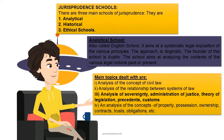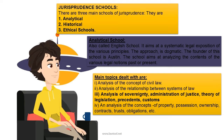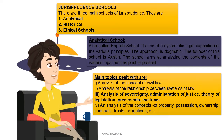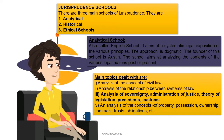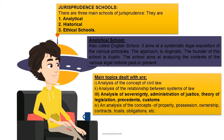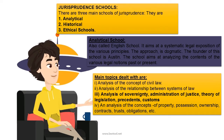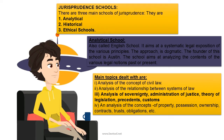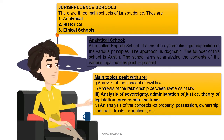There are three main schools of jurisprudence: one, analytical; two, historical; three, ethical. The analytical school, also called the English school, aims at a systematic legal exposition of the various principles. The approach is dogmatic. The founder of this school is Austin. The school aims at analyzing the contents of various legal notions, past or present.